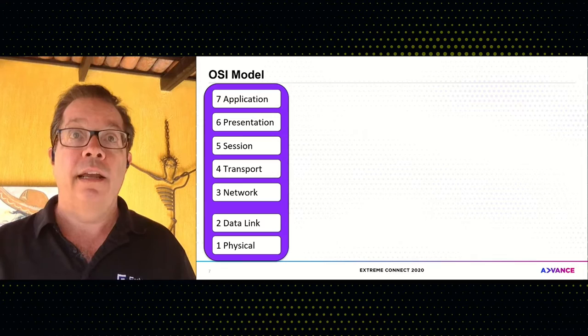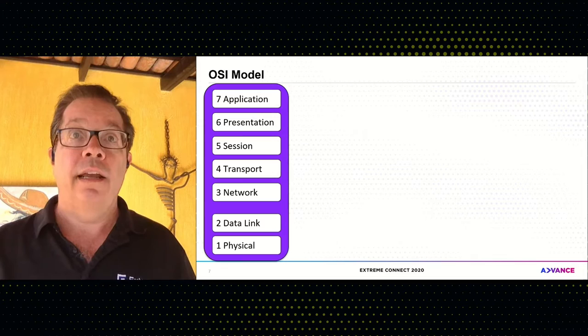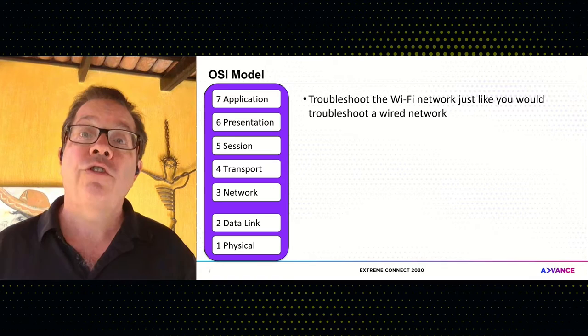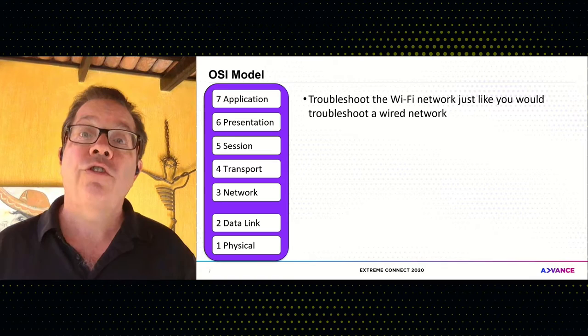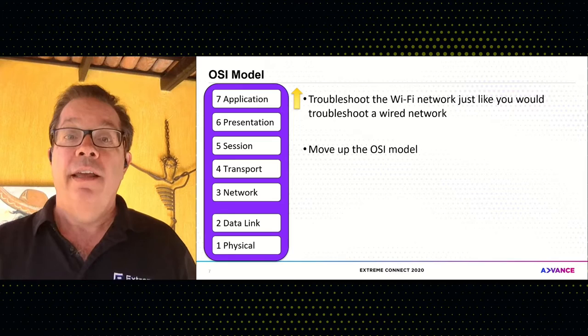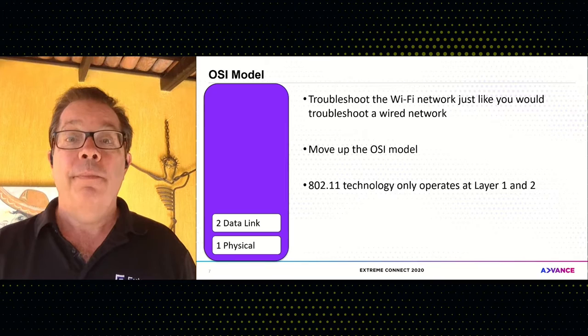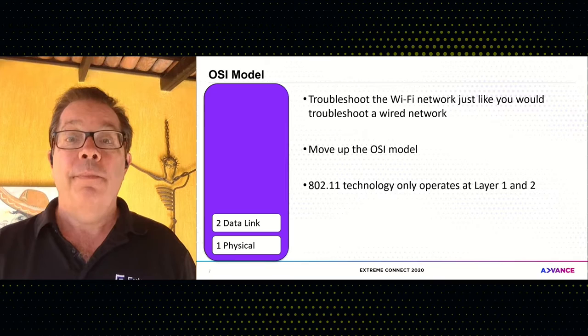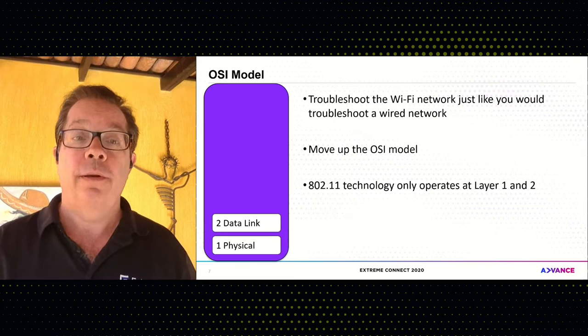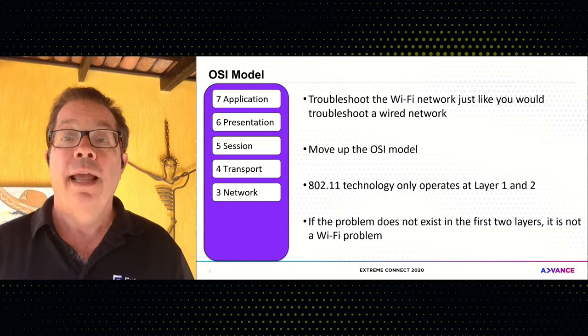My second tenet is troubleshoot via the OSI model. You should troubleshoot a Wi-Fi network just like you troubleshoot a wired network — go up the OSI model, start at layer one and move to layer seven. About 70% of problems happen at layer one. Remember that Wi-Fi — 802.11 technology — only operates at layer one and layer two. So if you can prove the problem is not at layer one or layer two, it's not a Wi-Fi problem.